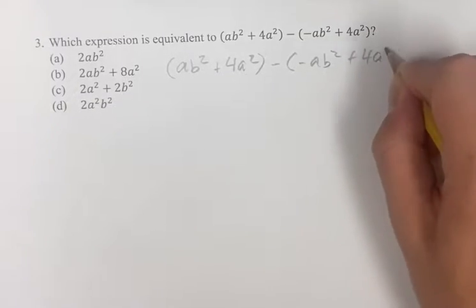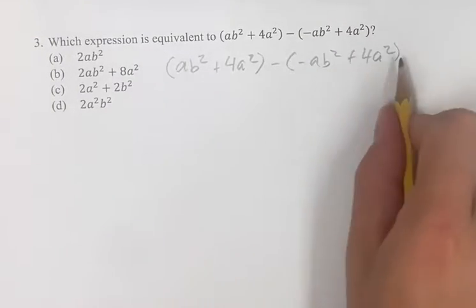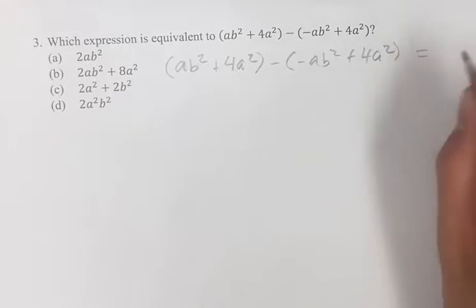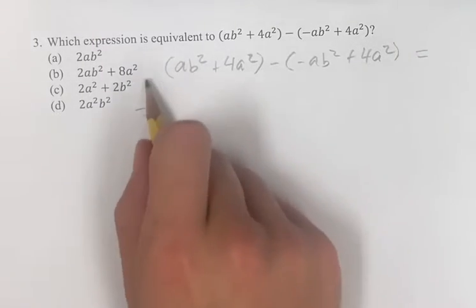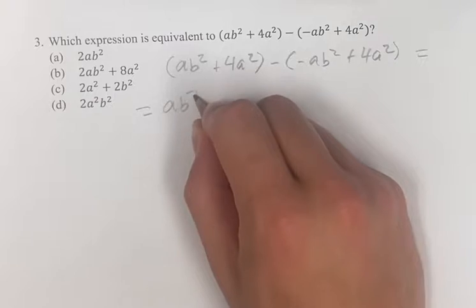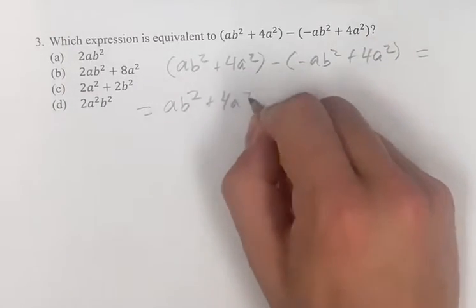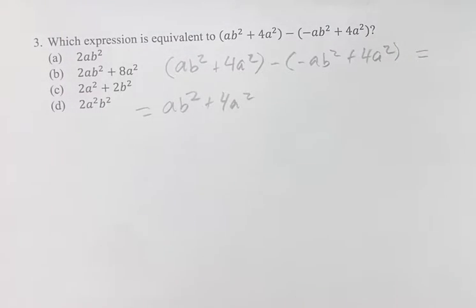So just writing it out right here, let's get rid of these parentheses and then we can add like terms together. This first parentheses is just on its own, so we can just get rid of it. We have ab squared plus 4a squared. We have the negative sign here, so we're going to have to distribute that.